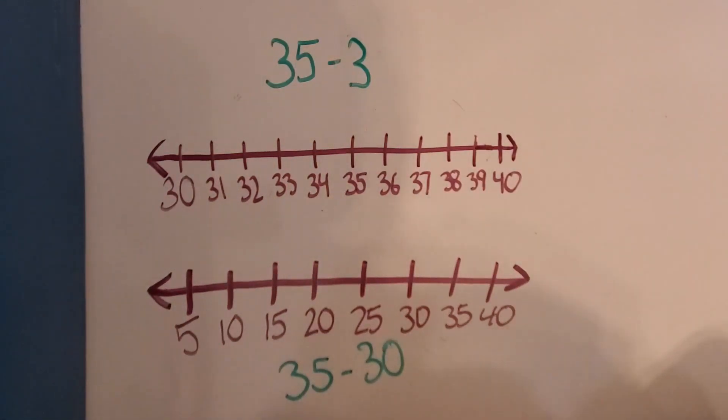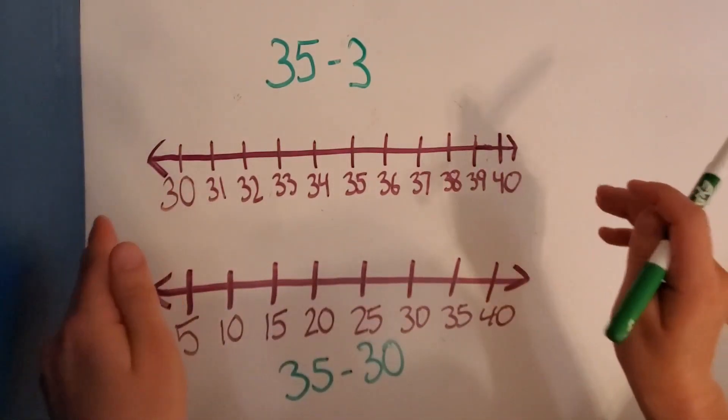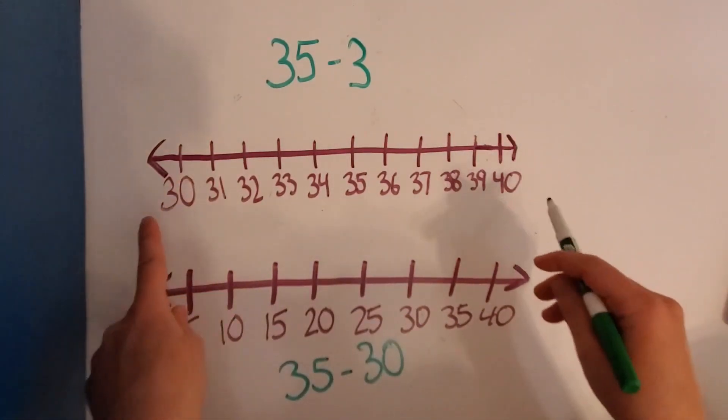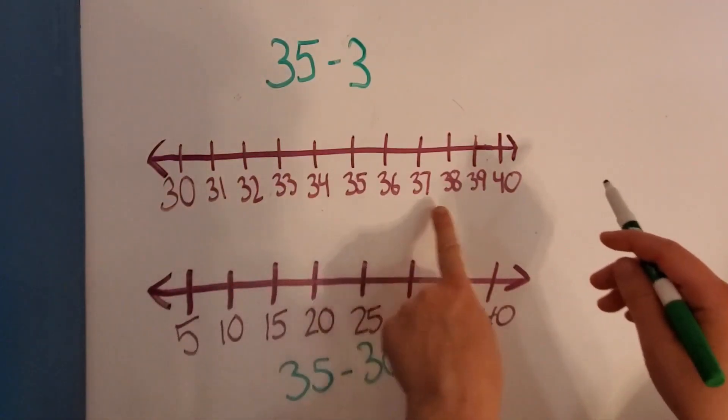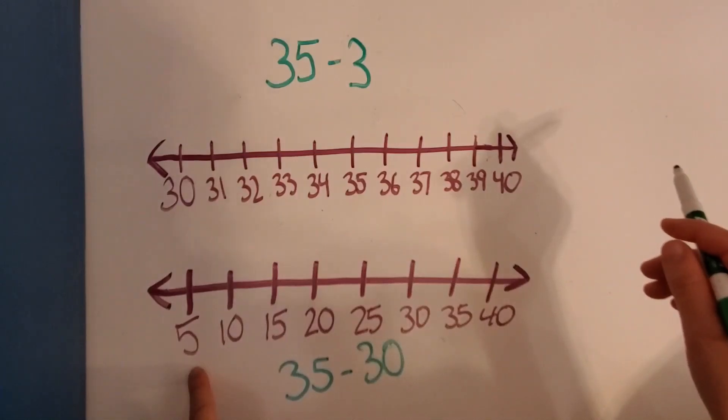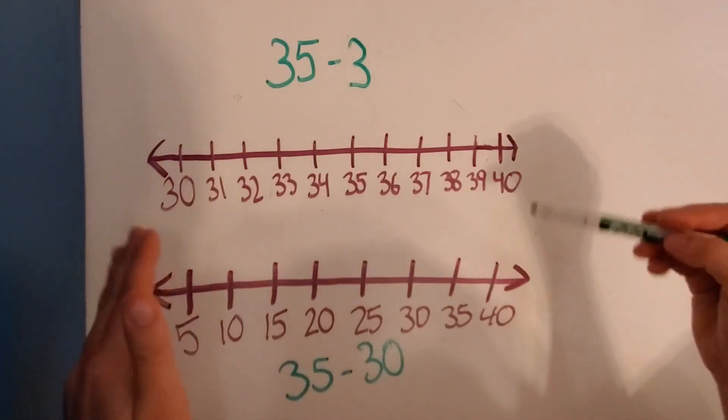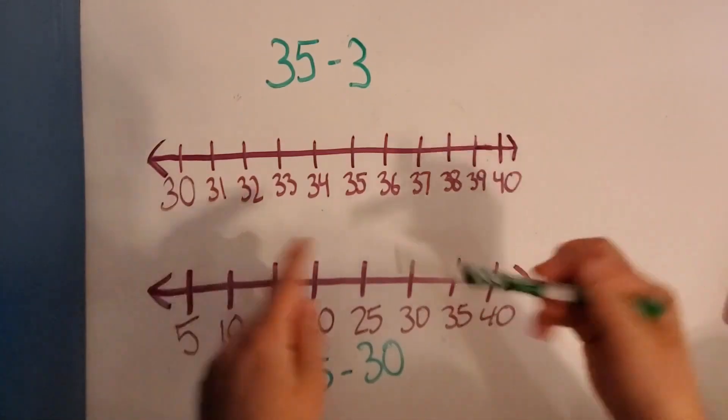Alright, so we are going to solve these and we're going to use these number lines to help us out. Now you'll notice that this number line starts at 30 and goes up by 1's until it gets to 40. And then this one starts at 5 and goes up by 5's until it gets to 40 as well. So these two number lines end at the same spot. They just get there different ways.